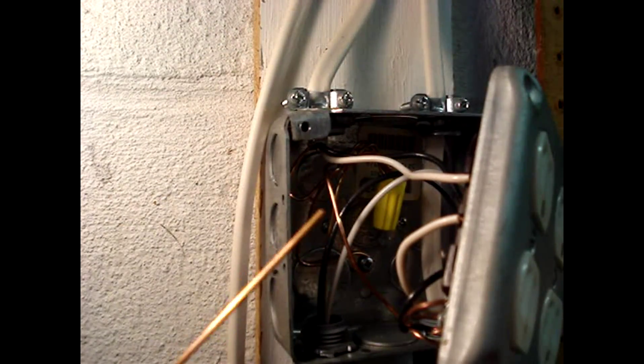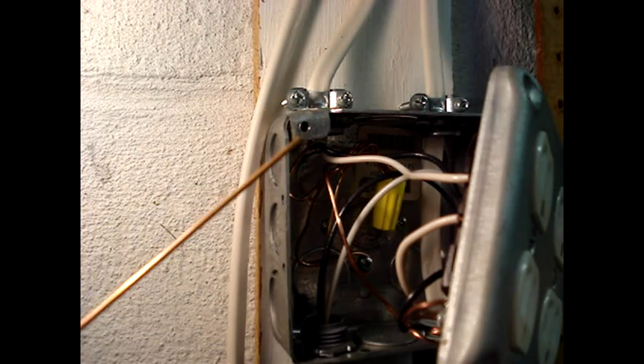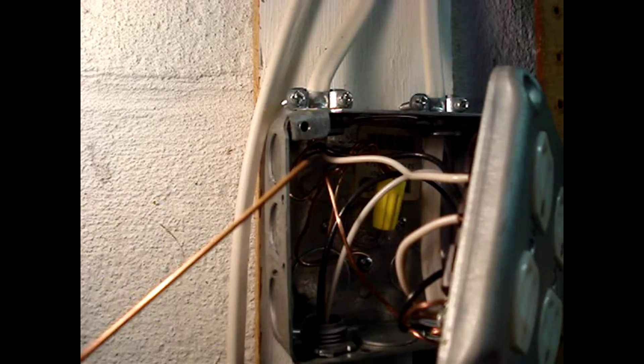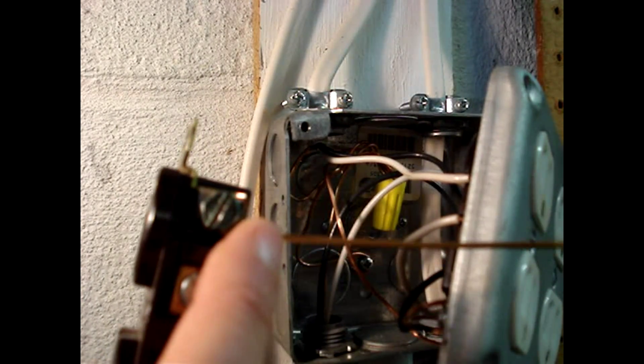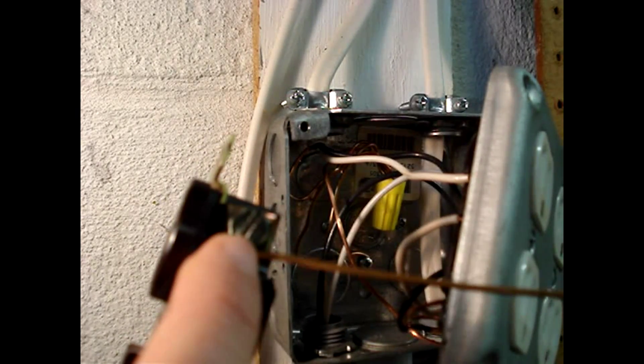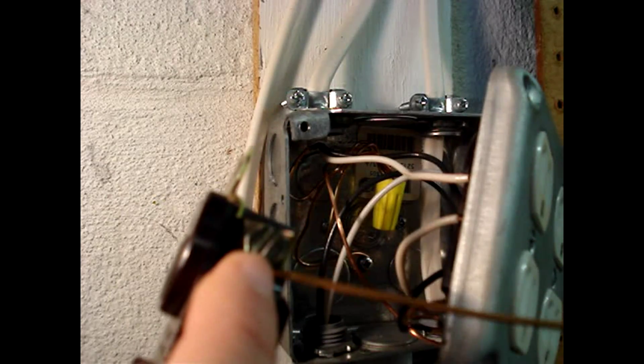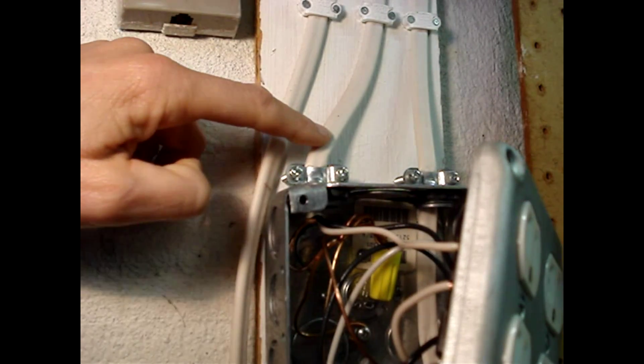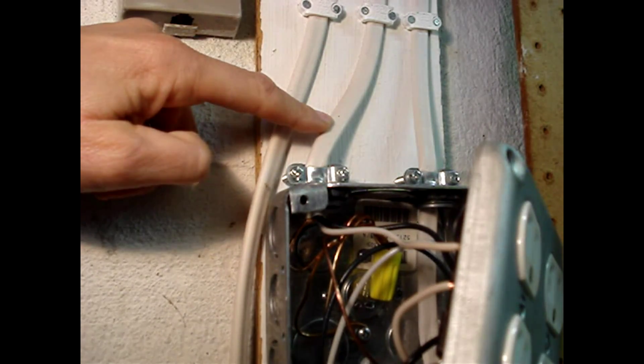If the box is plastic, you don't need the extra ground wire connected to the box. You only need to connect the grounding wire that is connected to the green screw on the receptacle to the ground conductors on the house wiring system.